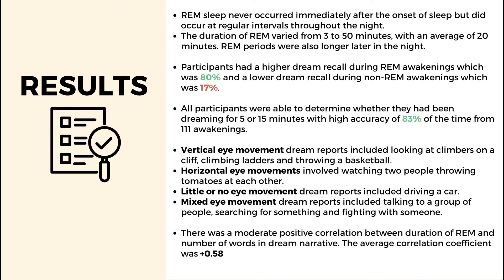For eye movements, there were four types: vertical, horizontal, little or no movement, and mixed. For vertical eye movement, dreamers reported watching climbers on a cliff, climbing ladders, or throwing a basketball. For horizontal eye movement, they watched two people throwing tomatoes at each other. Little or no eye movement corresponded to dreams of driving a car. Mixed eye movement corresponded to dreams of a group of people talking, searching for something, or fighting. For aim four, there was a positive correlation between REM duration and number of words in the dream narrative, with an average correlation coefficient of +0.58.